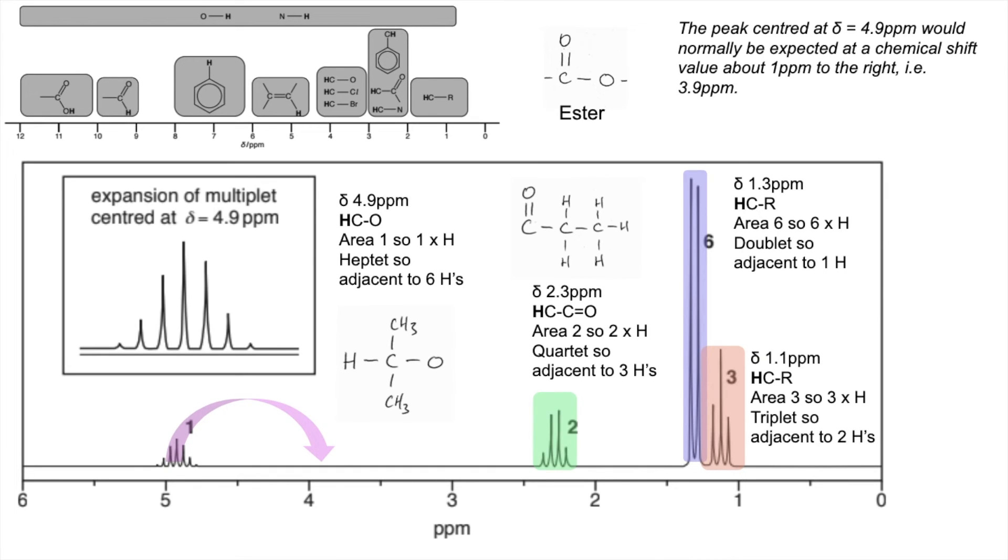It's a triplet, so it's adjacent to 2 H's, which obviously ties together with that. So these are causing that orange coloured signal there, adjacent to those two, so split into that triplet.